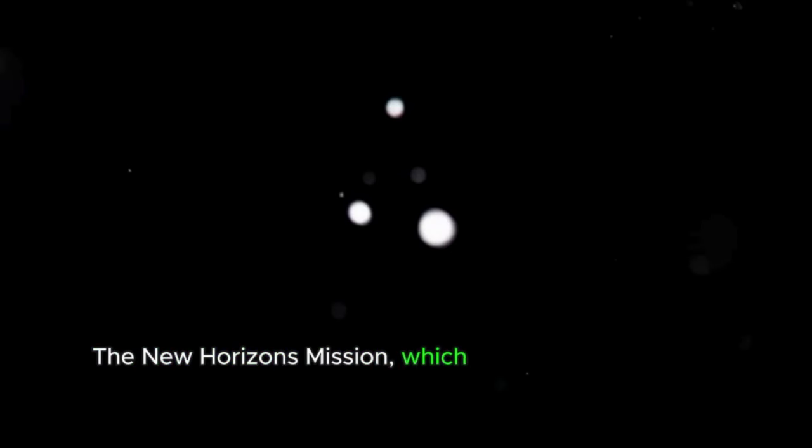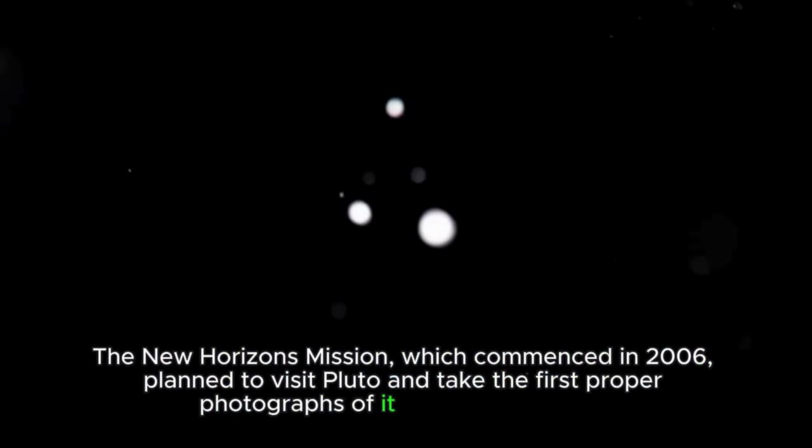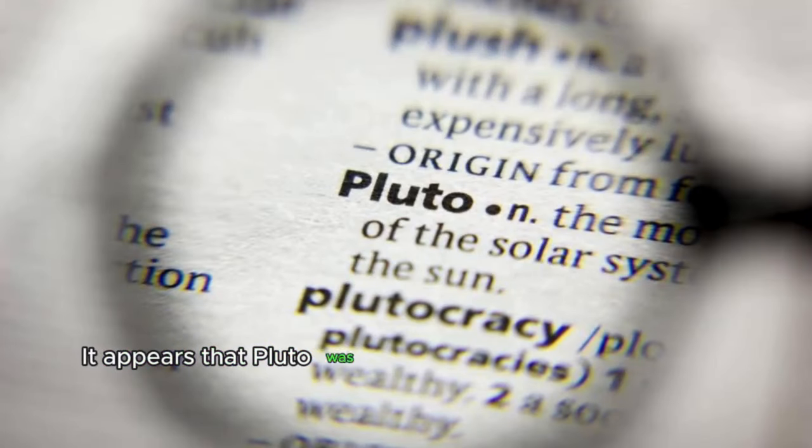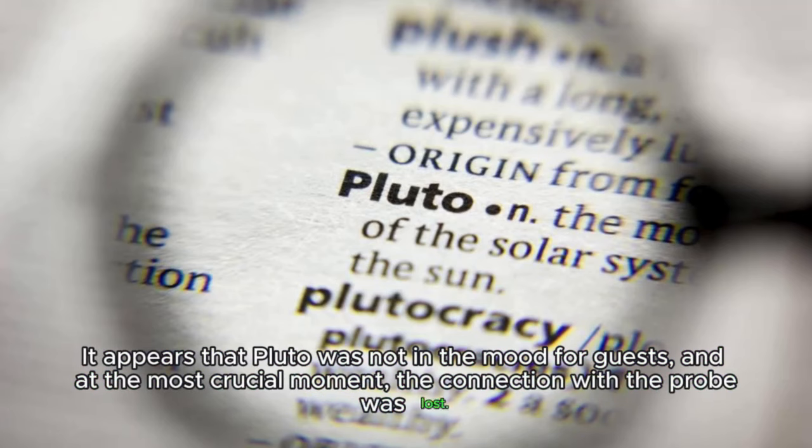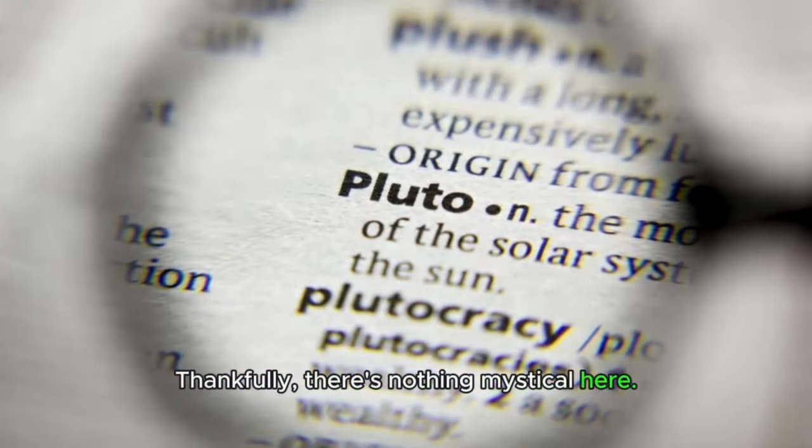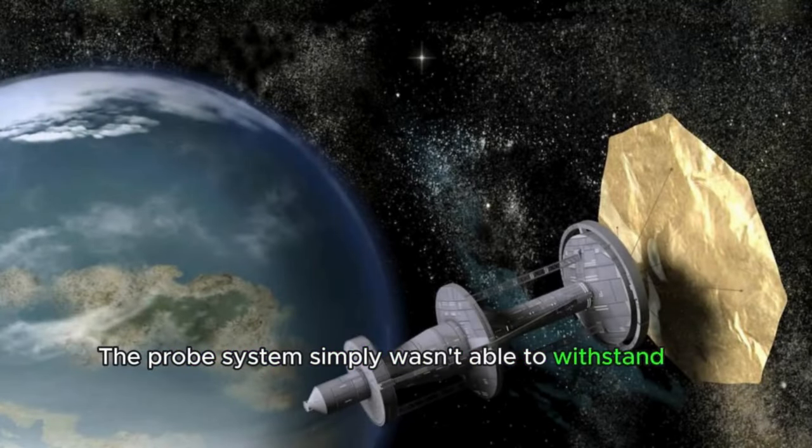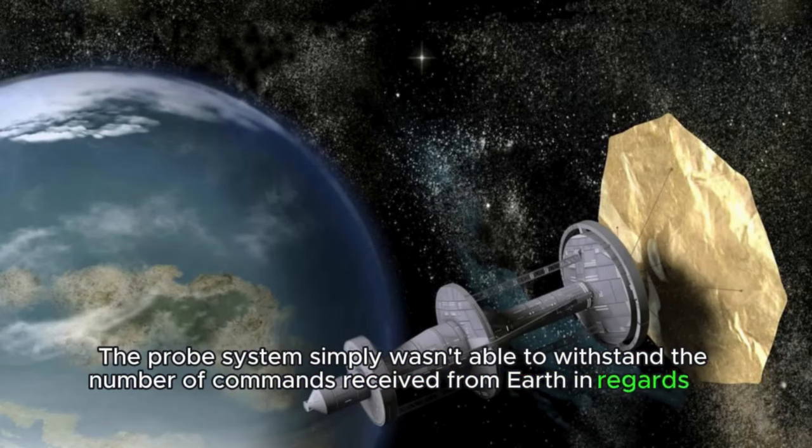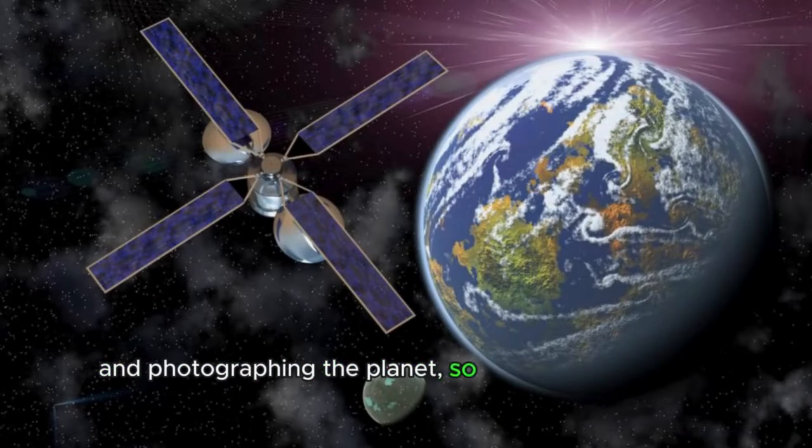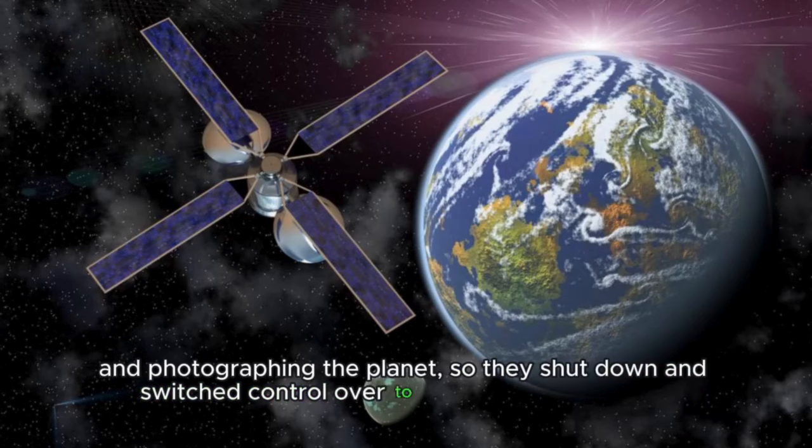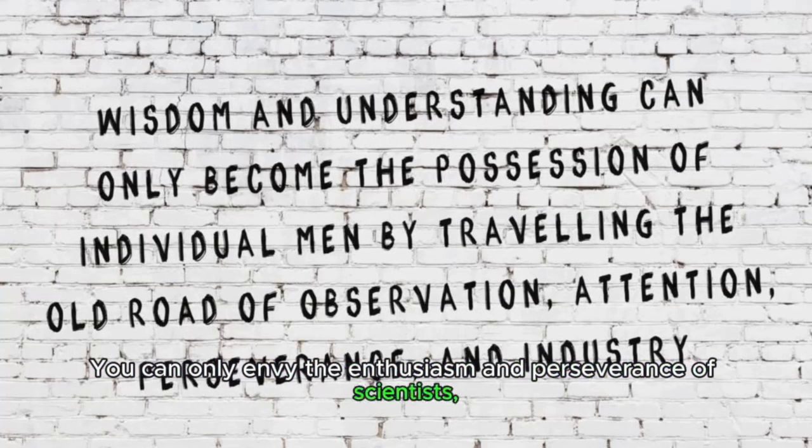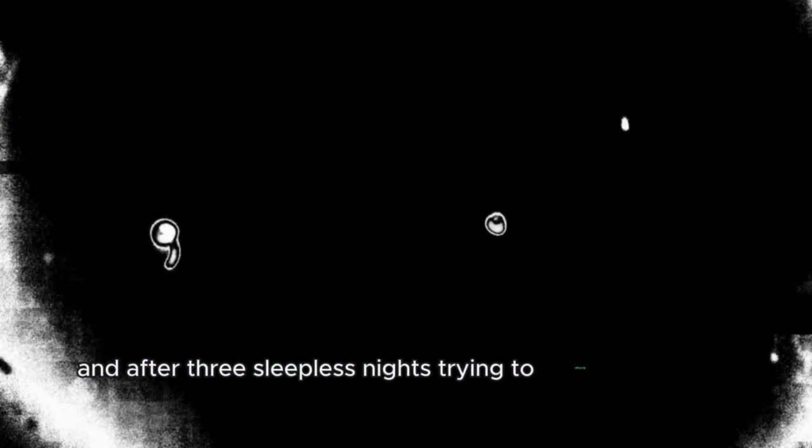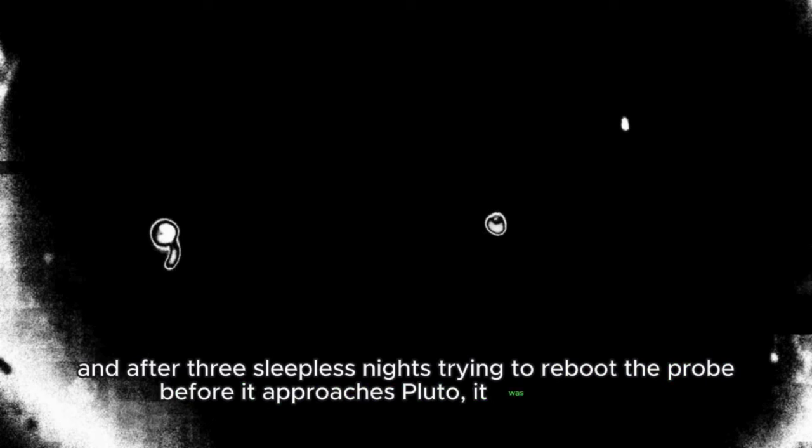The New Horizons mission, which commenced in 2006, planned to visit Pluto and take the first proper photographs of it right from its orbit. It appears that Pluto was not in the mood for guests, and at the most crucial moment, the connection with the probe was lost. Thankfully, there's nothing mystical here. The probe system simply wasn't able to withstand the number of commands received from Earth, so they shut down and switched control over to the reserve computer. You can only envy the enthusiasm and perseverance of scientists. And after three sleepless nights trying to reboot the probe before it approaches Pluto, it was a success.